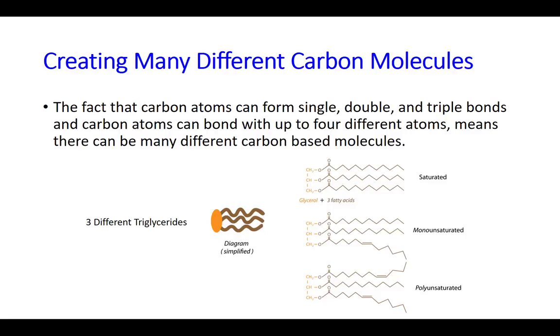Put in one double bond, as you can see in monounsaturated, and you notice how one of the fatty acids becomes bent. The polyunsaturated has two double bonds. You notice its shape changes. So notice the number of carbons it attaches to and the number of bonds and the type of atoms it attaches to can really create many different kinds of molecules. Thanks for listening.